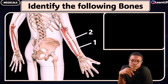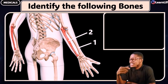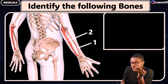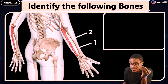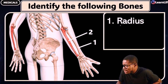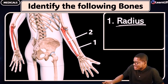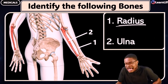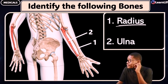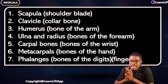Now identify bones one and two. One is the ulna and two is the radius. Check which one is longer — two is longer than one. So one is the ulna and two is the radius. You can see that the radius is lateral; the one that is medial and close to the midline of the body is the ulna. So we have the ulna as well as the radius.